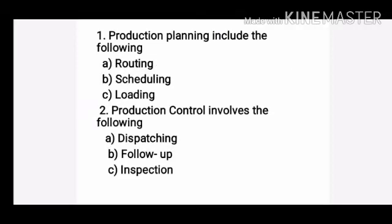Production planning includes routing, scheduling, and loading. Then production control involves dispatching, follow-up, and inspection.